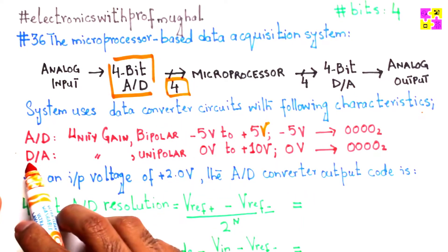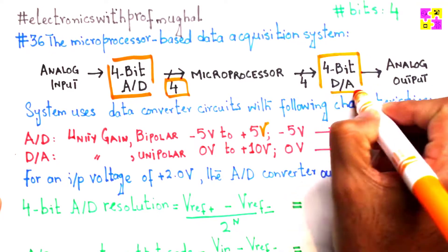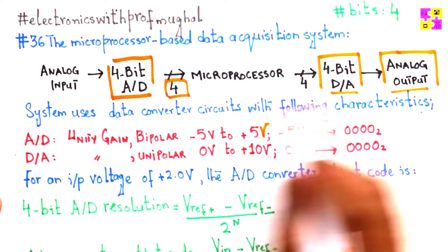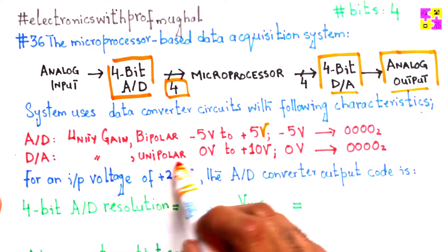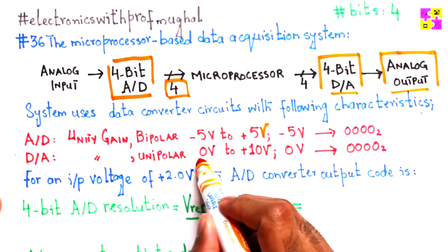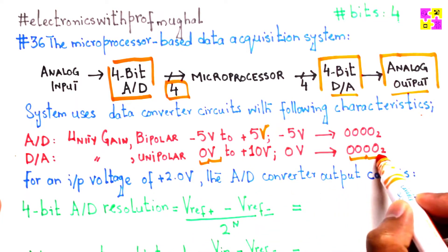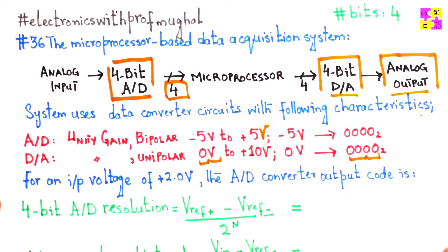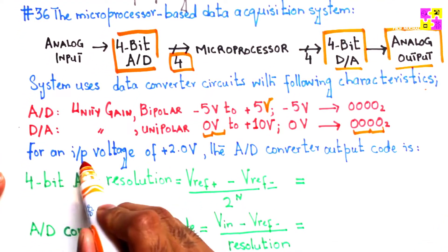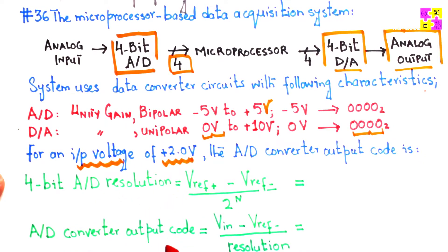Similarly, the digital-to-analog converter, shown here, because the output is being displayed in analog form, is a unity gain unipolar 0 volt to 10 volts, where 0 volt basically means 0000. Again, it's a 4-bit format. We have to find out, for an input voltage of 2 volts, what the ADC output code is.